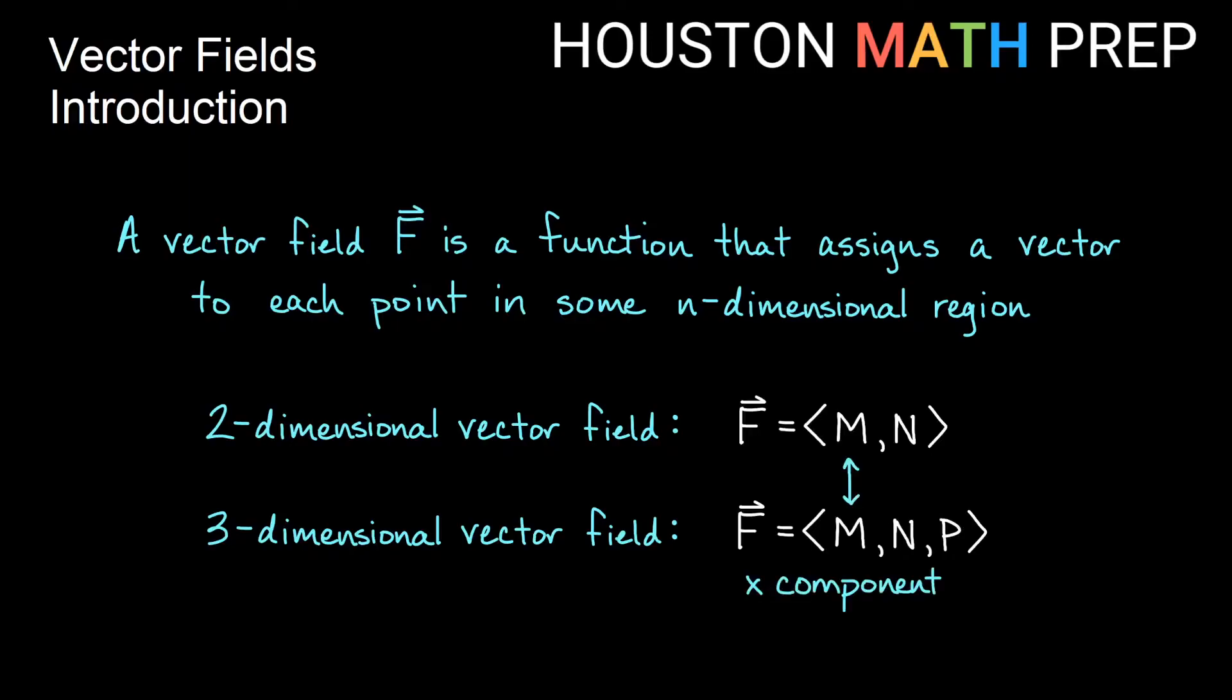So M in each of these is going to be our x component, N in each is going to be our y component, and then in three-dimensional space we'll need an additional z component for our vector field.